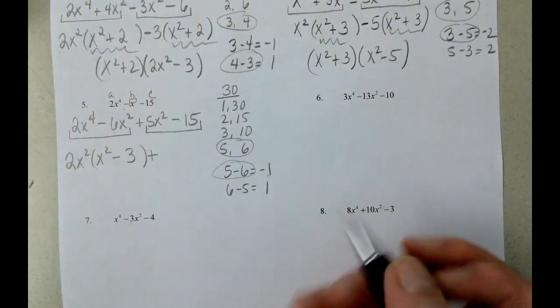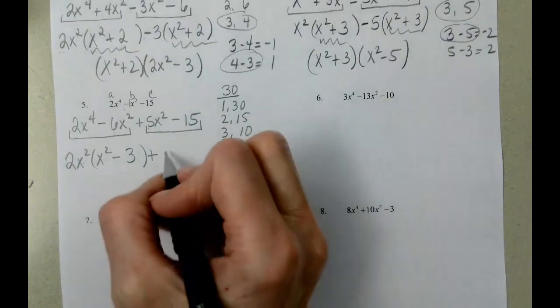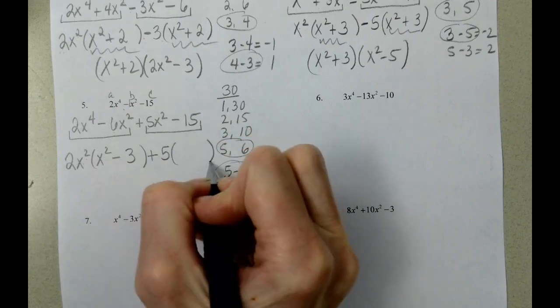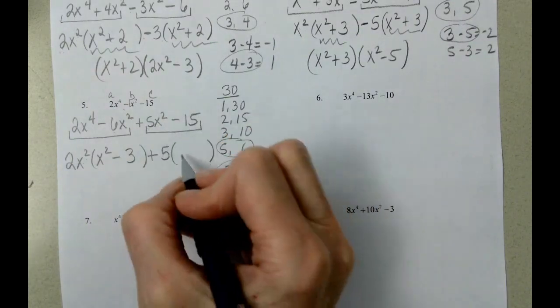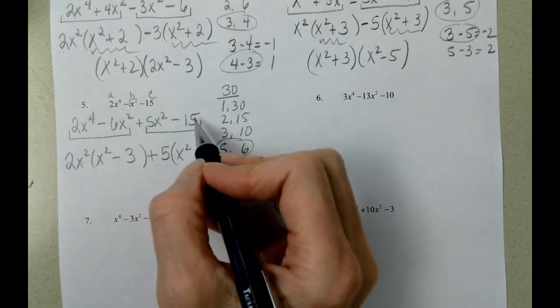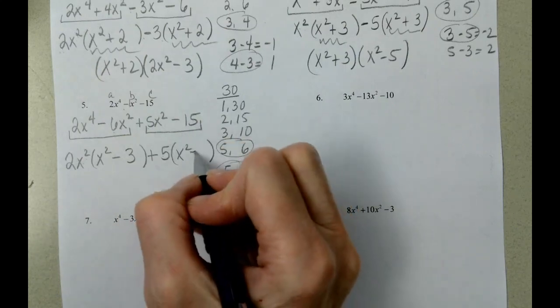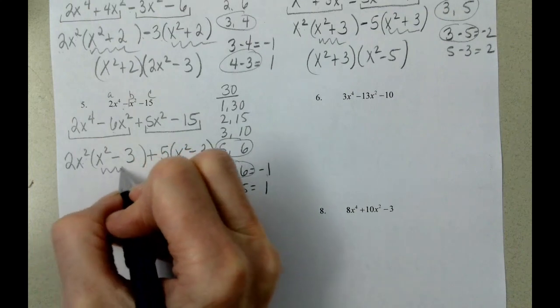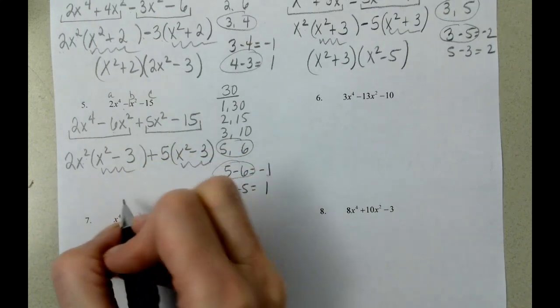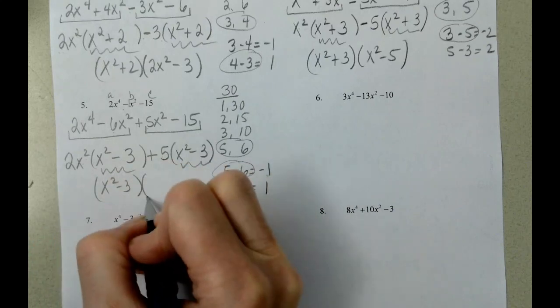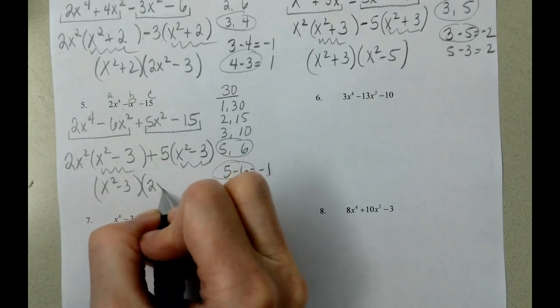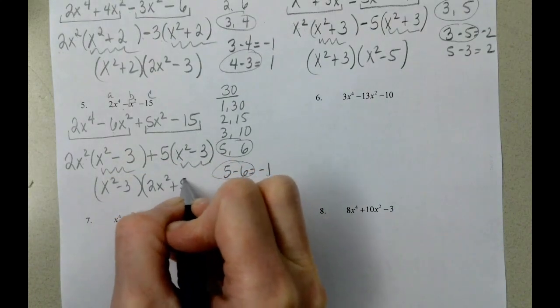In our next group, the biggest number that divides into 5 and 15 is 5. 5 divided by 5 is 1, x squared. 15 divided by 5 is 3. And we end up with x squared minus 3 and then 2x squared plus 5.